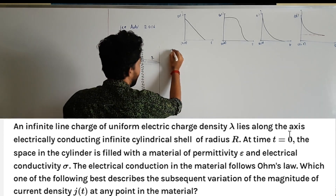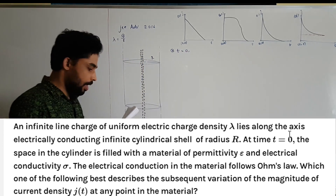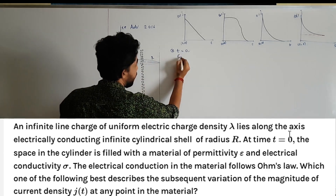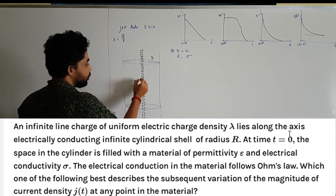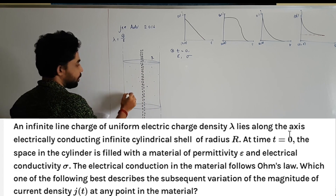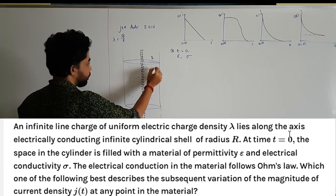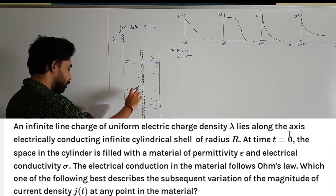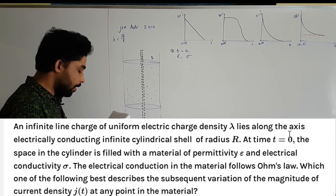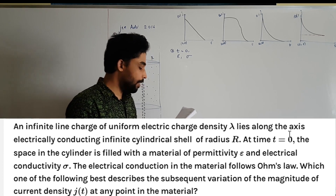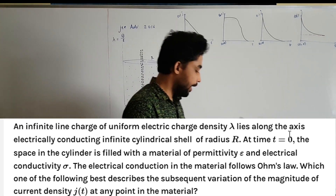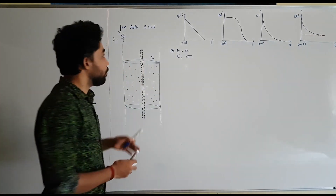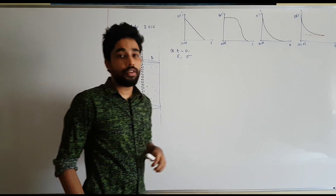At time t equals 0, the space inside the cylinder is filled with a medium of permittivity epsilon and conductivity sigma. The conduction in the material follows Ohm's law. The question asks: which one of the following best describes the subsequent variation of the magnitude of current density at any point in the material?